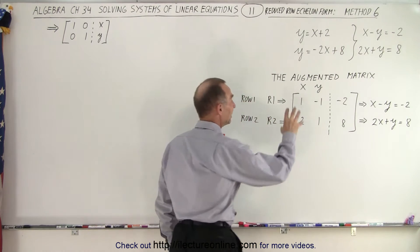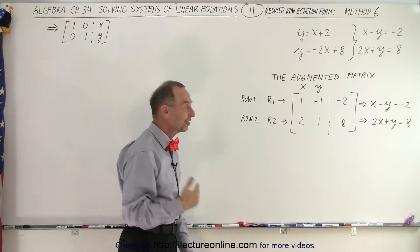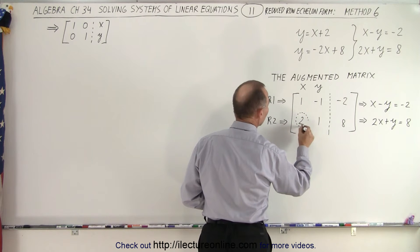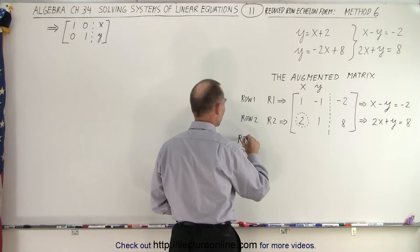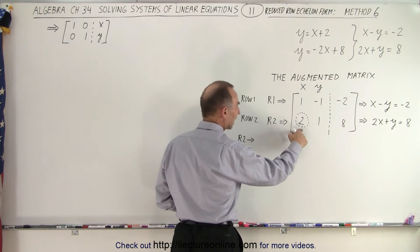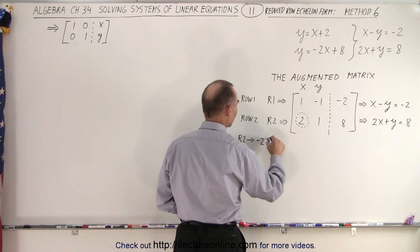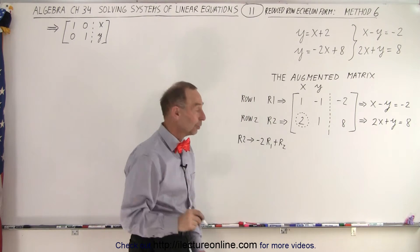Now we're going to make this look like that by going through a series of steps. The first thing we want to do is get rid of the 2 here and turn that into a 0. We can do that by taking row 2 and replacing it by negative 2 times row 1 and adding it to row 2.